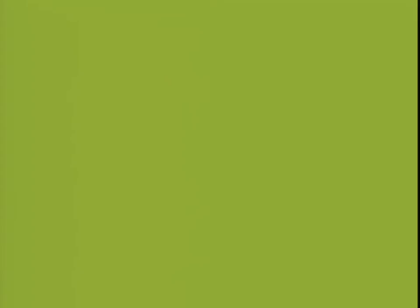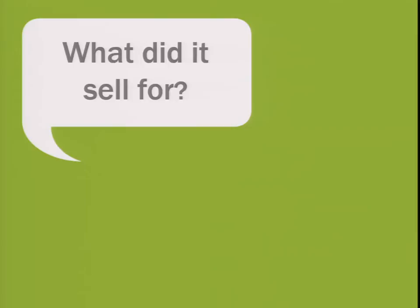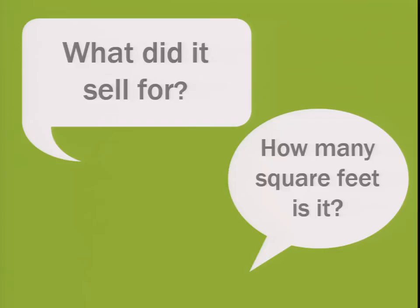Some simple data questions we answer on our site include: what did it sell for, or how many square feet is the home? From Zillow analysis, we've found that the average home in the U.S. has three bedrooms, two bathrooms, is about 1,550 square feet, and was built in 1972. Lots of parts of the country are different, but in essence the average home is kind of the same. We also have information on over 130 million home sales in our database.